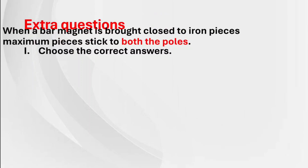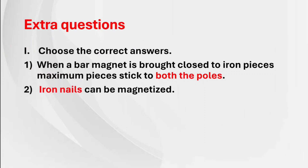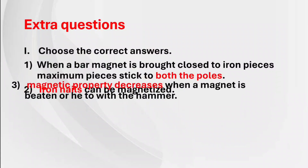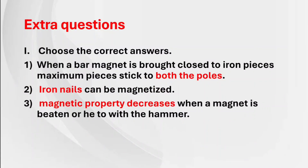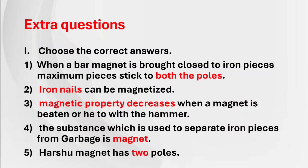Extra questions — first one, choose the correct answers. When a bar magnet is brought near iron pieces, maximum pieces stick to both the poles. Second: iron nails can be magnetized. Third: magnetic property decreases when a magnet is beaten or heated with a hammer. Fourth: the substance used to separate iron pieces from garbage is a magnet. Fifth: a horseshoe magnet has 2 poles.